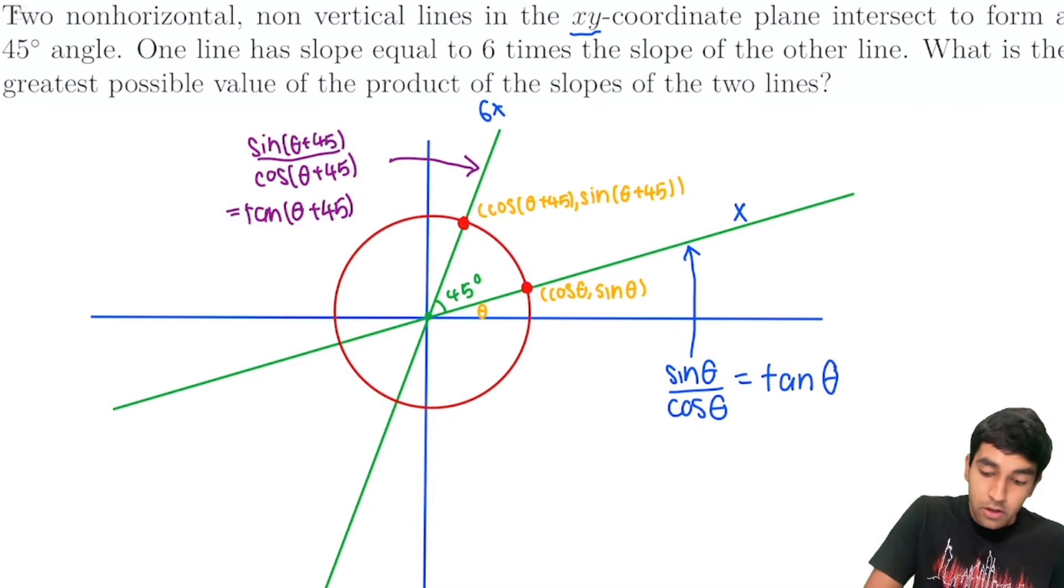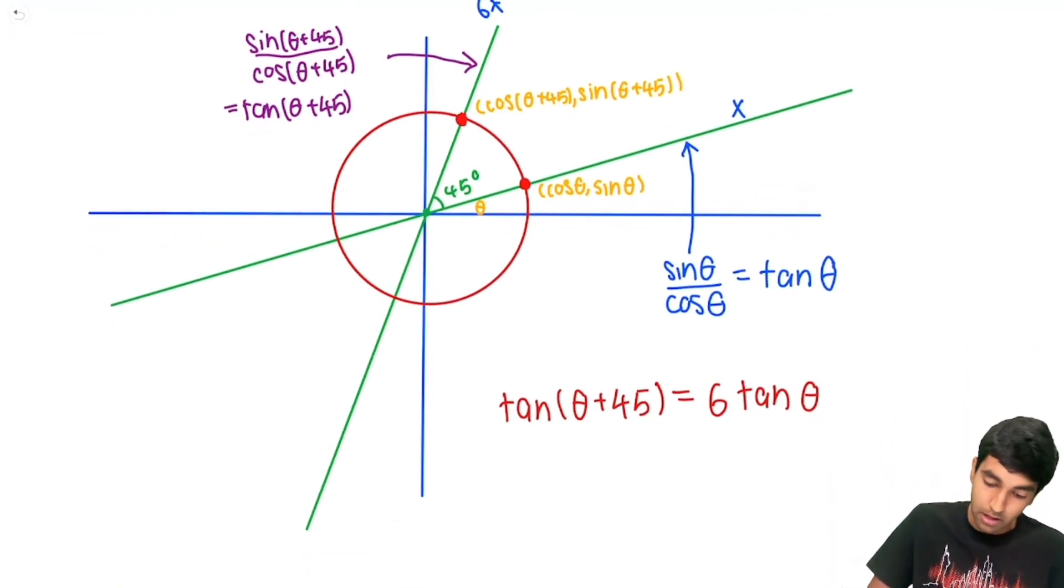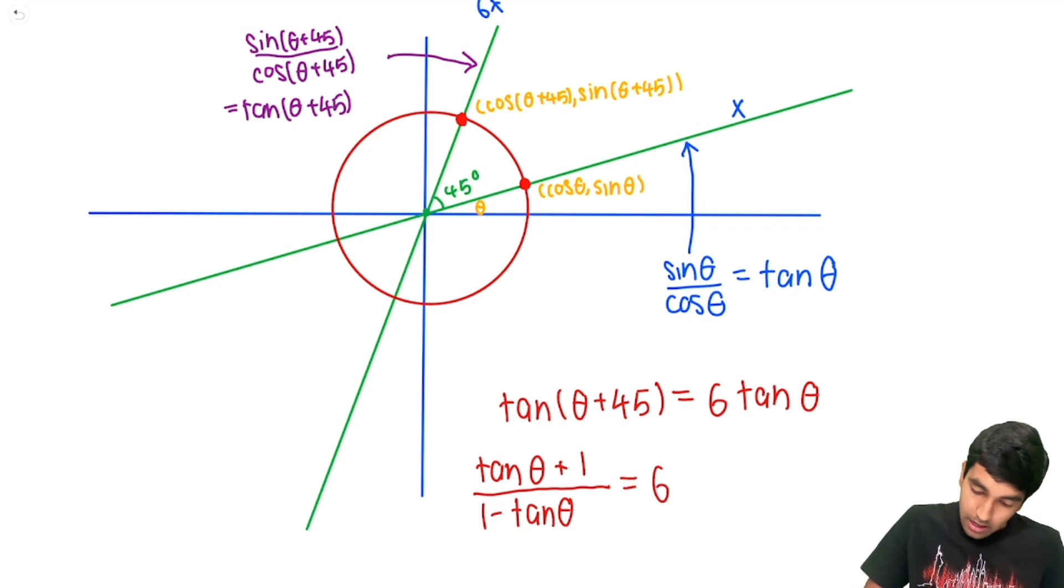So now how do we use the fact that the slope is tangent theta versus tangent theta plus 45? Well, now we can just write an equation, right? We have tangent of theta plus 45 equals 6 times tangent of theta. And now we just use the tan summation formula. So this is tan a plus tan b. Tan 45 is just 1. Plus 1 over 1 minus tan theta. And we have this equal to 6 tan theta.